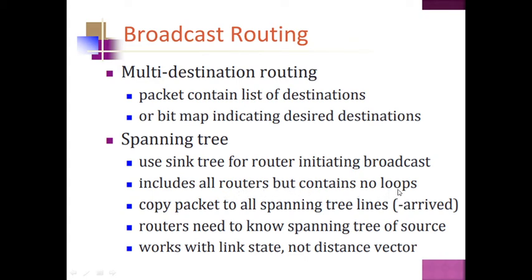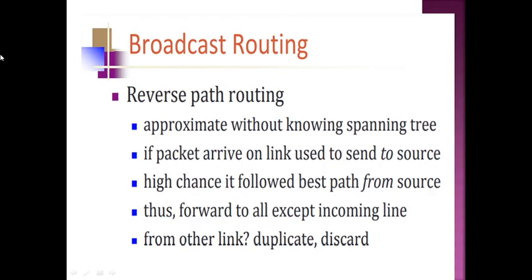The spanning tree includes all routers but contains no loops. Copies of the packet are sent to all spanning tree lines. The router needs to know the spanning tree source, using link state rather than distance vector routing. The next technique in broadcast routing is reverse path routing. Without knowing the spanning tree, reverse path routing checks from which link a packet arrived and uses the same link back to the source. Only packets arriving on the best path from the source are forwarded; duplicate links are discarded.